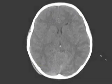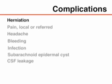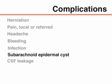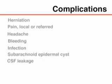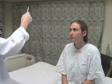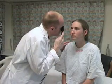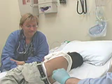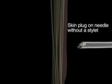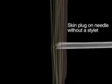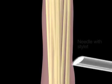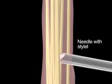Lumbar puncture has numerous possible complications, including cerebellar herniation, referred pain, headache, bleeding, infection, the formation of a subarachnoid epidermal cyst, and leakage of spinal fluid. You can avoid many of these complications by conducting a careful assessment of the patient before the procedure, including a thorough neurologic examination and retinoscopy, and monitoring the patient throughout the procedure. A subarachnoid epidermal cyst occurs when a skin plug is introduced into the subarachnoid space; the standard use of a needle with a stylet will avoid this complication.